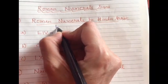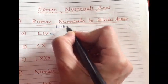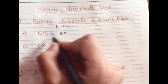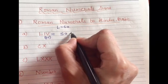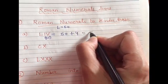You know that L represents 50. So I will write down 50 here. IV is 5 minus 1 which is 4 plus 4. So this is 54.